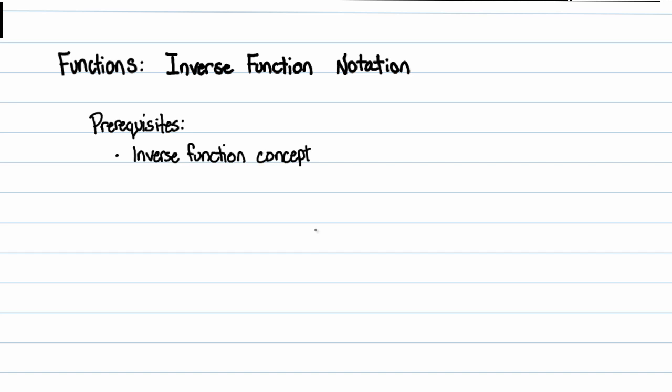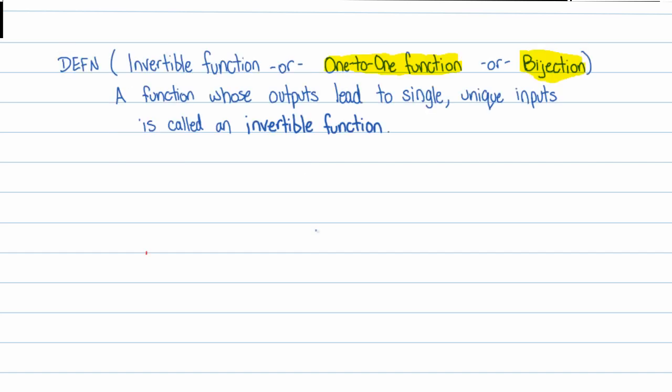So you have to know about functions, domain, range, and all that. At the end of the last lecture, the conceptual lecture, I had mentioned the definition of an invertible function: a function whose outputs lead to single unique inputs is called an invertible function. I just want to mention that here because we're about to use that language in another definition.